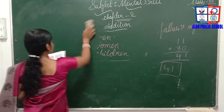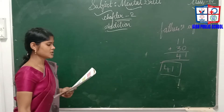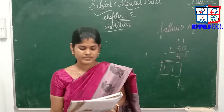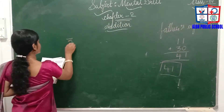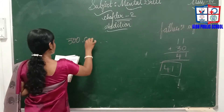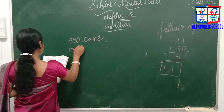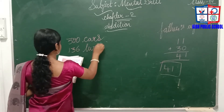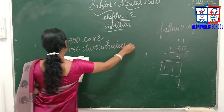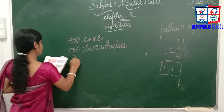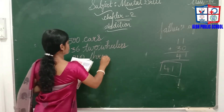Third question: on a particular day, there are 300 cars, 136 two-wheelers, and 210 three-wheelers at a cross-hip tower gate. The question asks how many vehicles passed through the gate on that day.